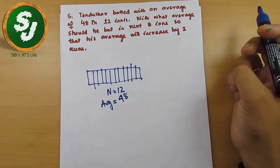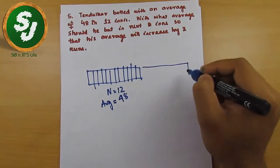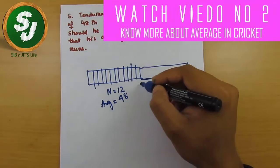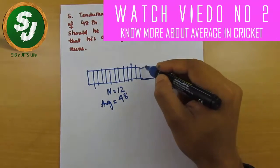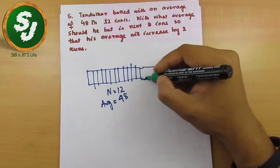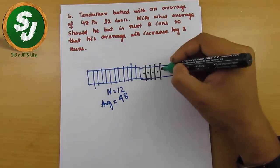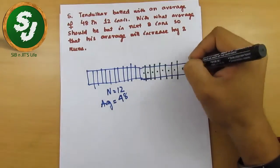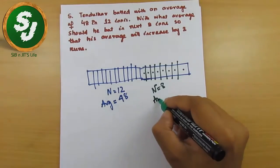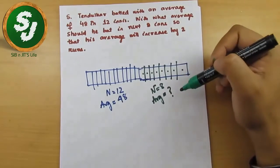With what average should he bat in the next 8 innings? Now the question comes here. Let's use another colored pen. With what average should he score in his 8 innings: 1, 2, 3, 4, 5, 6, 7, and 8. Here N is 8 and average is asked in the question.